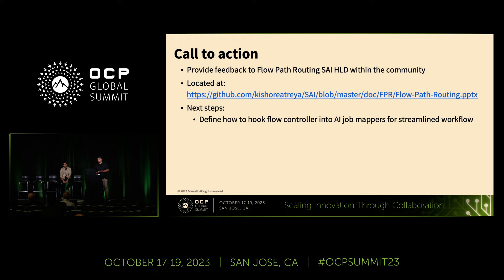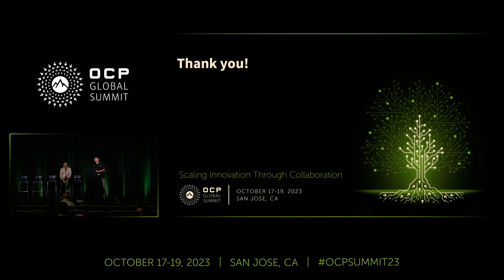With that, we'll come to our call to action. There is an HLD that we have currently up in the SAI community — it's located at this link. Please feel free to provide feedback to us, and we're welcoming collaboration on this concept. We understand it's a little early, and we're looking to the industry to come support us in this effort. Some other areas for us to look at: as we mentioned, there is a mapping function, and if there are ways we can take advantage of what the mapping function does in AI and how it maps flows in the fabric itself, that's another area for collaboration. With that, we can end our presentation. Thank you.